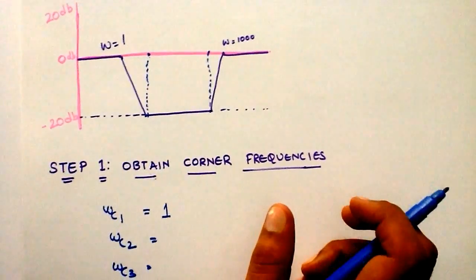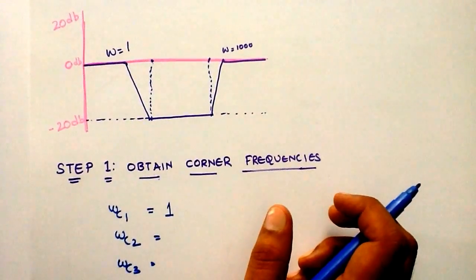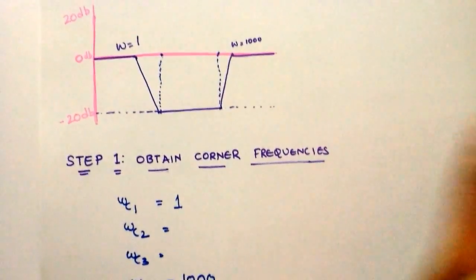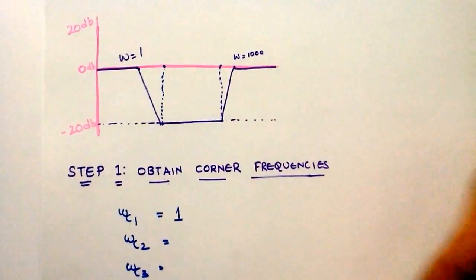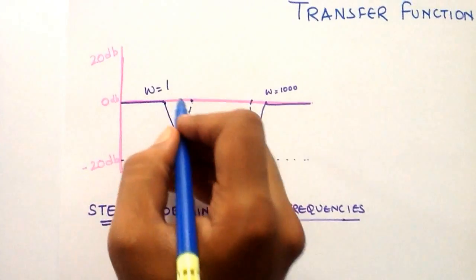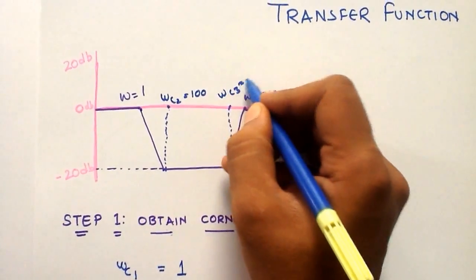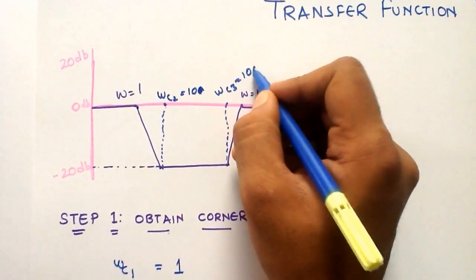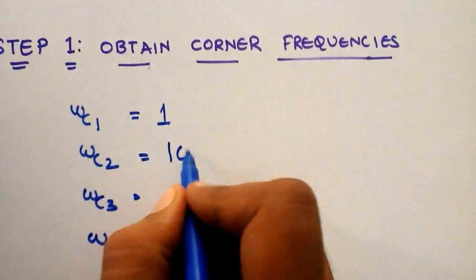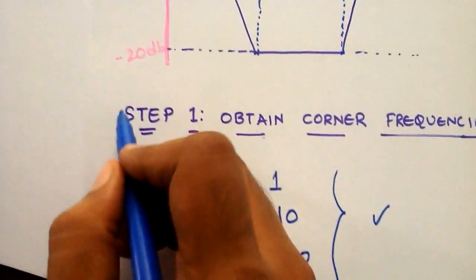If you remember sketching the Bode plot when given a transfer function, you should remember taking the scale in terms of powers of 10 — 1, 10, 100, 1000. So omega C2 is equal to 10 and omega C3 is equal to 100. Now we have all four corner frequencies. Step 1 is done.